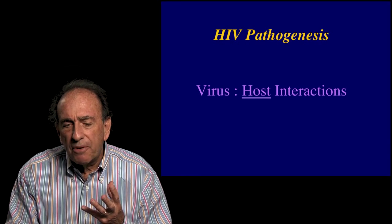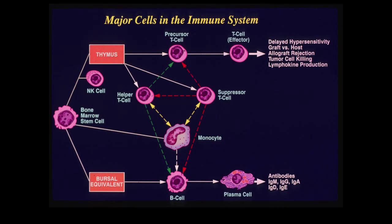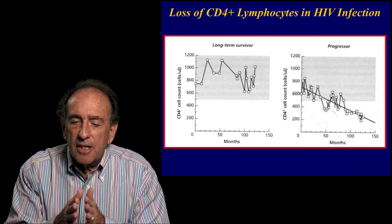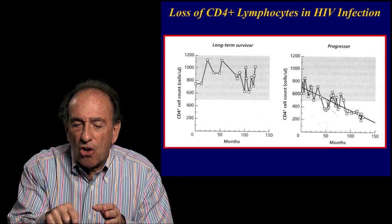What can the host do to prevent virus from causing disease? Here is a simplified picture of the immune system. Focus on the top — the T cell, which can interact with and generally kill virus-infected cells. At the bottom, B cells and plasma cells make antibodies that circulate in the blood, attach to the virus, neutralize, and inactivate it. At the center is the helper T cell, one of the most important elements of the immune system, which helps the other arms of the immune system to function.